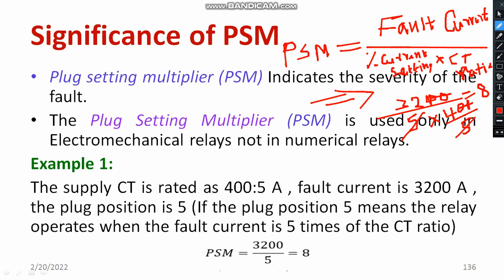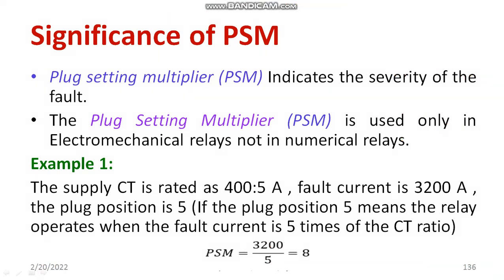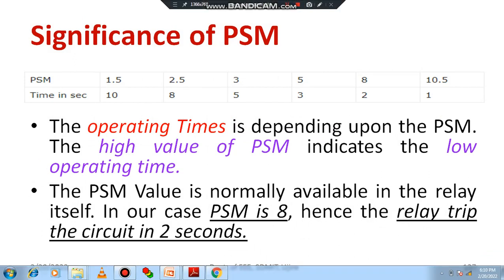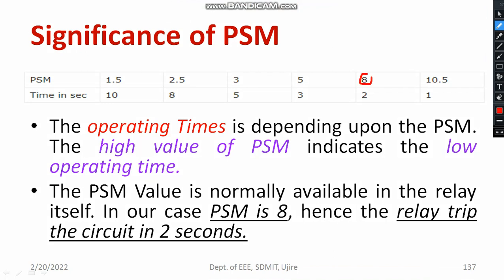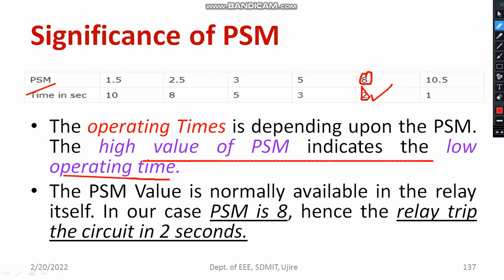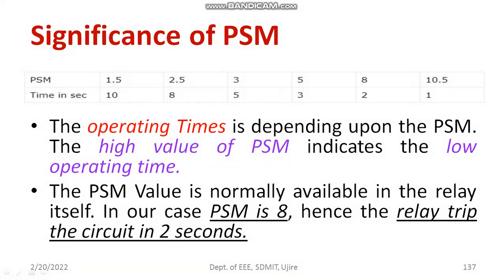Here you are supposed to multiply 5 into the CT ratio, which is 400 by 5. That gives the answer — PSM is 8. Now, corresponding to PSM equal to 8 from the table, the operating time is 2 seconds. The operating time depends on the value of PSM. A high value of PSM indicates low operating time, meaning if the severity is high, the relay has to operate quickly. The PSM value is normally available in the relay itself. In case PSM is equal to 8, the relay trip time is 2 seconds, as is clear from the table.